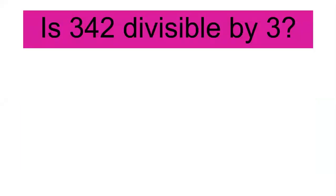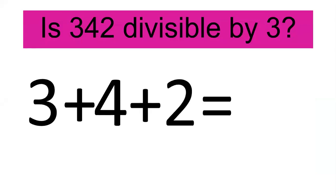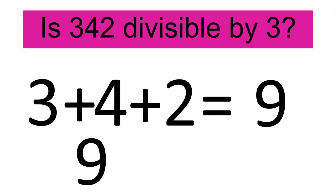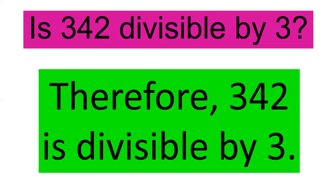Let's give an example. Is 342 divisible by 3? We're going to add the digits: 3 plus 4 plus 2 equals 9. Then, 9 divided by 3 equals 3. Therefore, 342 is divisible by 3.